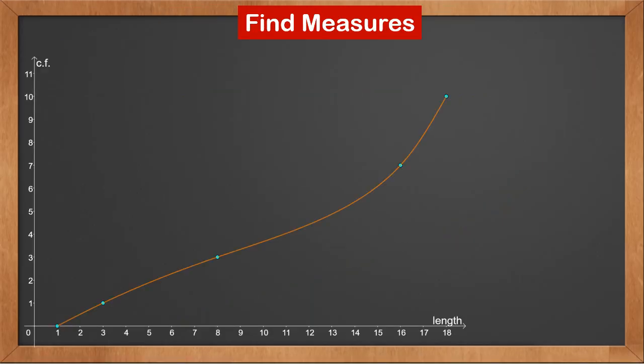From the cumulative frequency graph, we can find measures of the data set. First, let's find the median. Median divides the data set in half. We know the total number of values, n, is 10. Therefore, we need to find the x value when y is equal to half n, 5. We locate 5 on the y axis, draw a horizontal line to hit the curve, and draw a vertical line to hit the x axis.